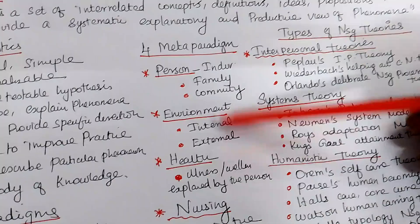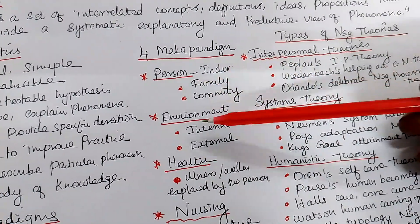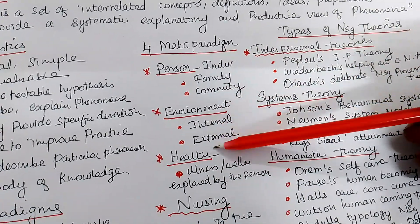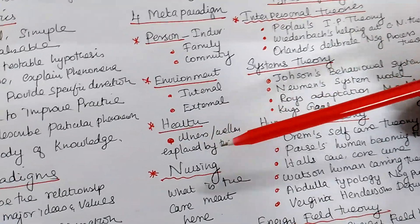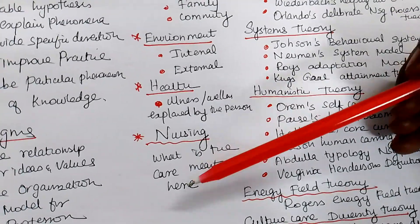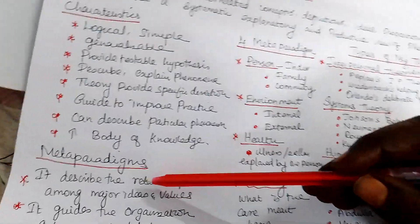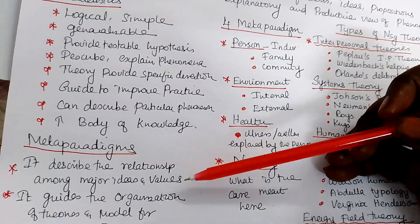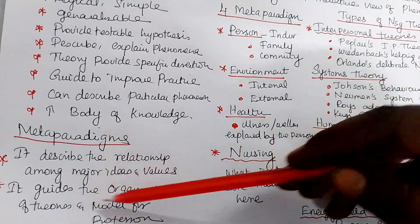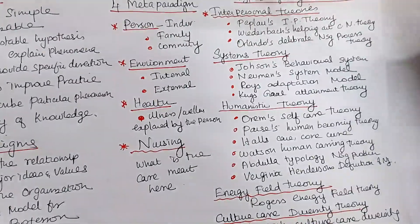Then, all theory of nursing, we have a meta-paradigm. As I explained to you, person, environment, health and nursing. Person may be individual, family or community. Environment may be internal and external. Health is the illness or wellness explained by the person or the community. Nursing is what the care we are doing to meet the needs of the individual. So meta-paradigms, it describes the relationship among the major ideas and values. It guides the organizing of the theory, models for the profession. That is the function of meta-paradigm. We have four meta-paradigm in nursing. This is the one.